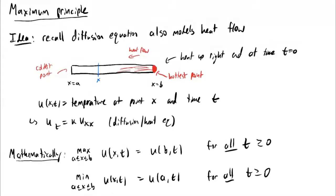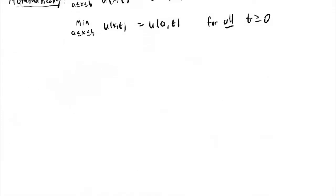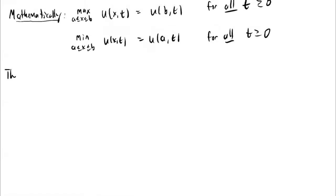What this basically says is that for this particular solution, the largest value occurs on the right boundary point and the smallest value occurs on the left boundary point. The maximum principle is a general fact about solutions to the diffusion equation which basically says that this sort of phenomenon always happens — the maximum and minimum values are always on the boundary of your domain for all time as t increases. Let me now state this as a theorem. There are a few different versions; what we're going to study is the weak maximum principle for the diffusion equation.